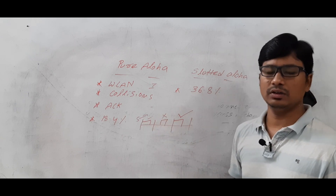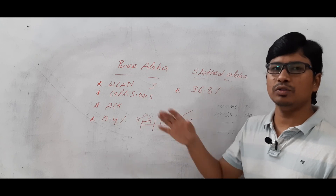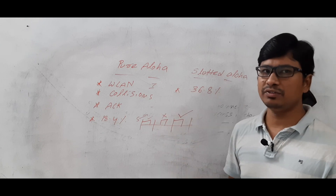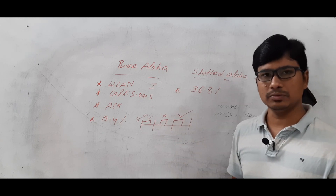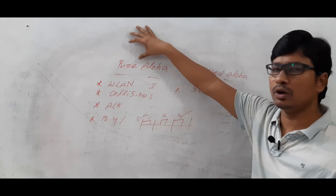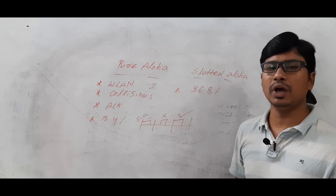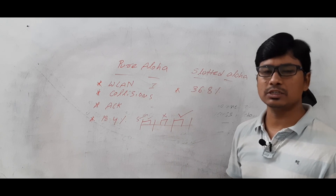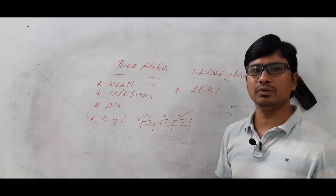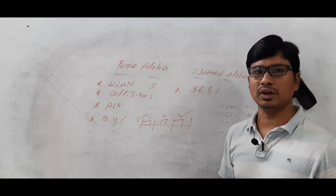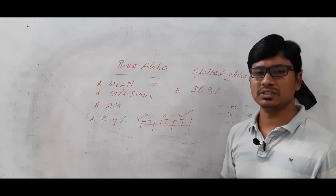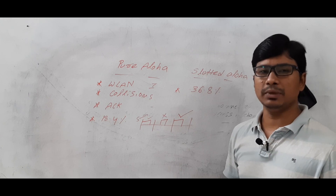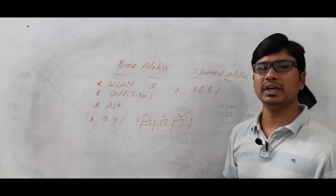I hope you have understood how the medium access control mechanisms are classified into three categories and what mechanisms exist in each category, and also the concepts of pure ALOHA and slotted ALOHA. If you still have any doubts related to this video, feel free to ask in the comment section — I will try to clear your doubts in less than 24 hours. If you really like my video, please press the like button, share the videos with your friends, subscribe to my channel and also press the bell button. Thank you for watching, have a nice day.